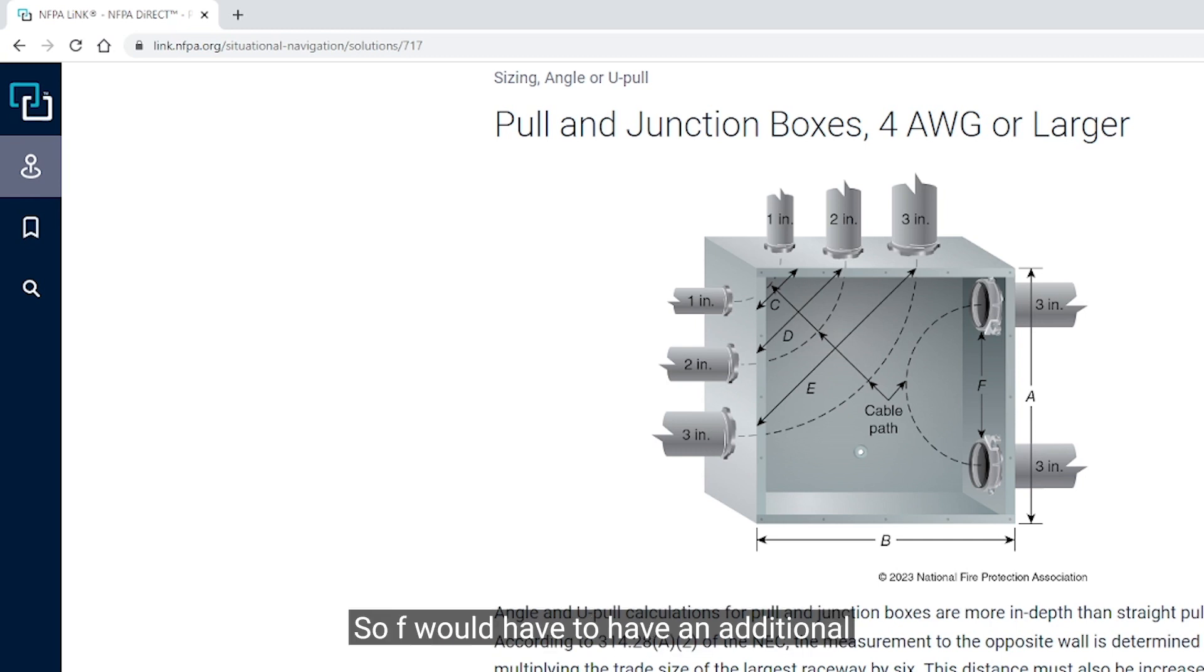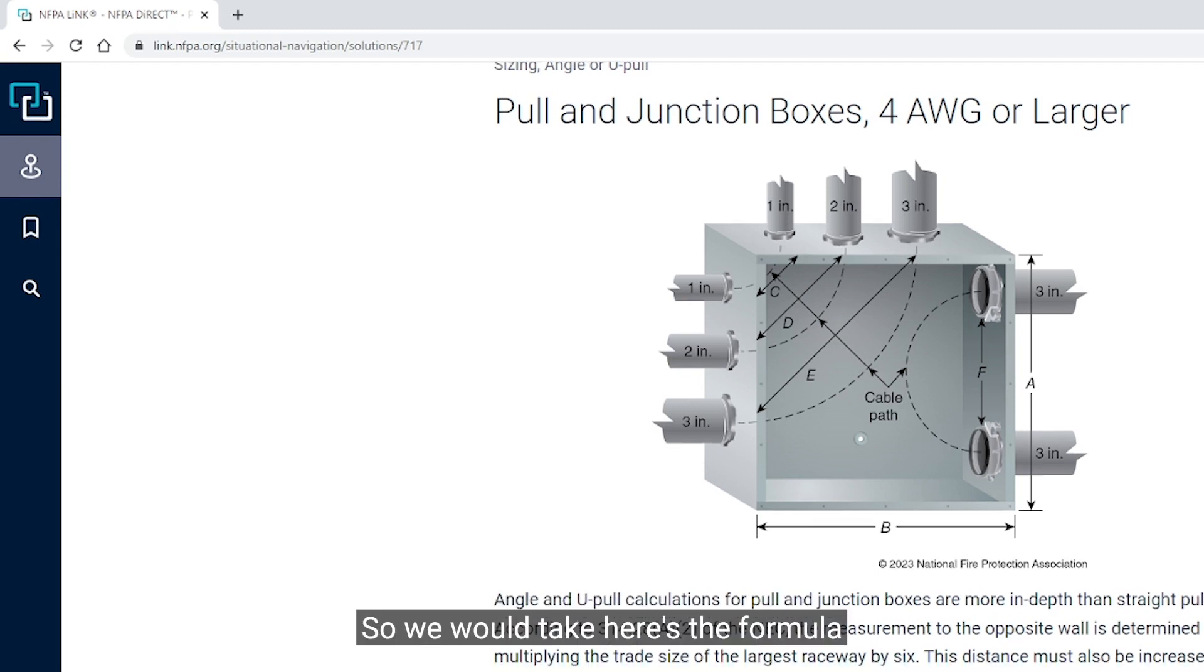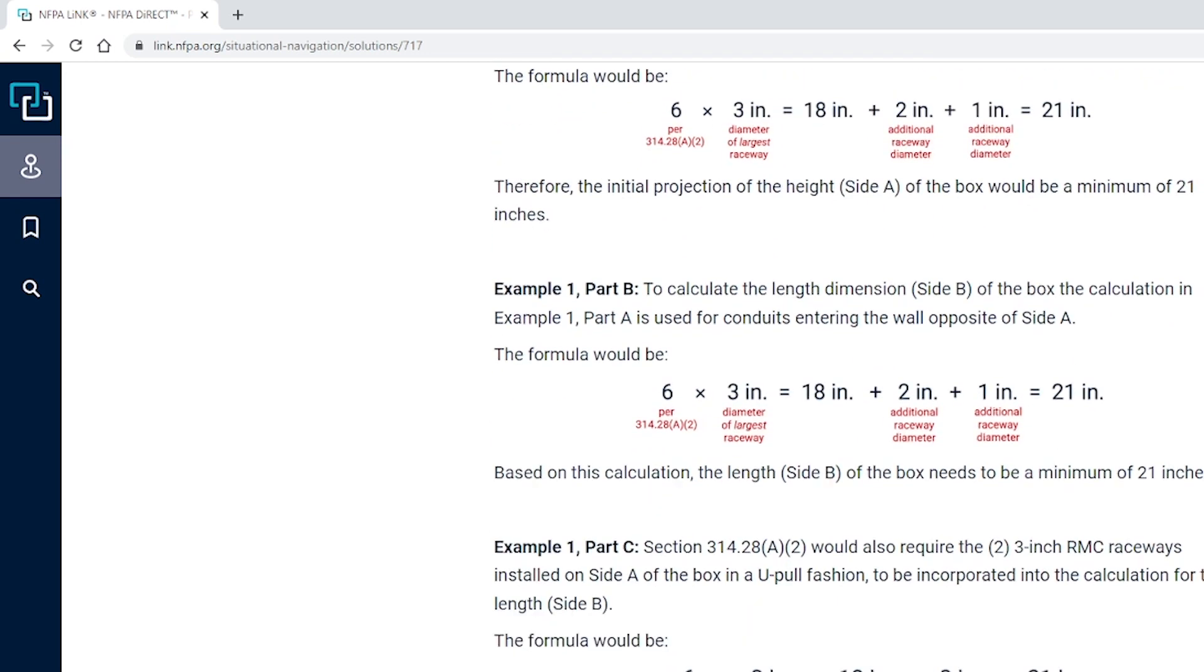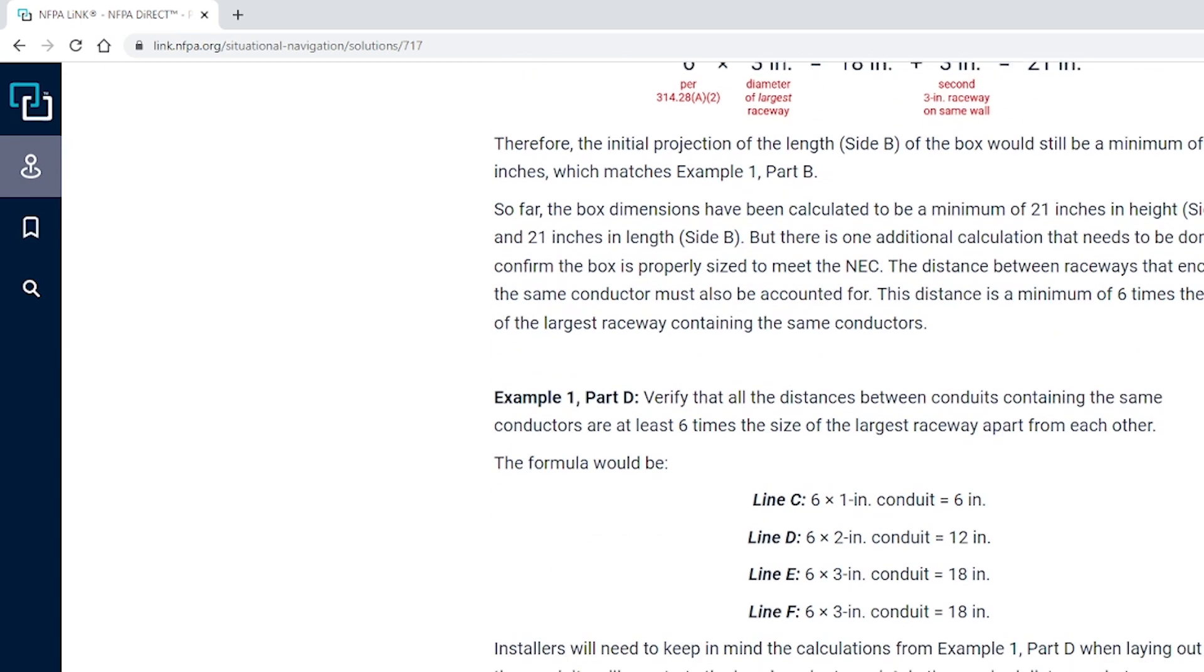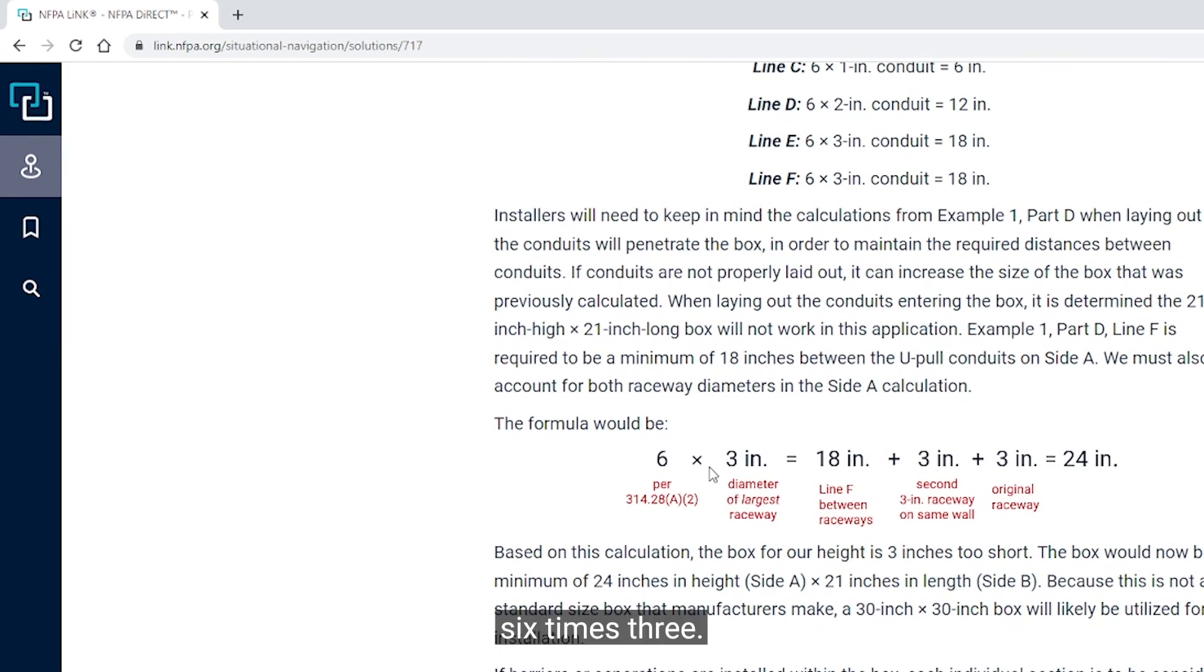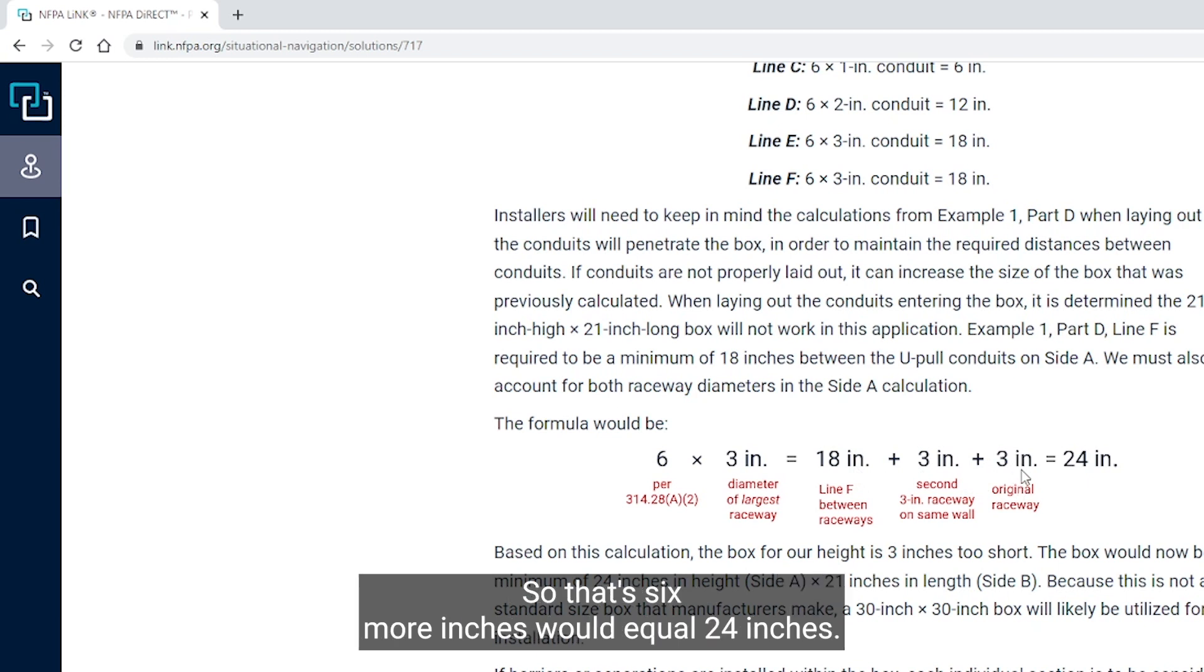So dimension side B, that lengthwise, 21 inches still probably would be okay. Line F, however, may cause us an issue. 6 times 3 equals 18, so this distance right here, line F, has to be 18 inches. Now in order to get that, we have to take into account the diameters of these raceways, top and bottom. So F would have to have an additional 6 inches added to it. The formula: 6 times 3, so that's the largest raceway, is 18 inches, so that's 18 inches between the raceways, plus 3 inch, plus 3 inch, so that's 6 more inches, would equal 24 inches.